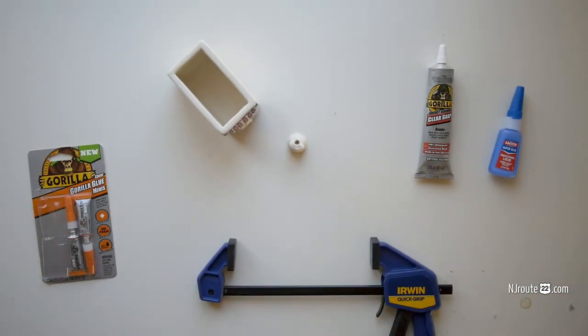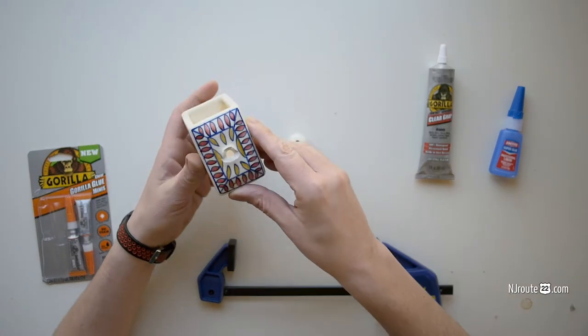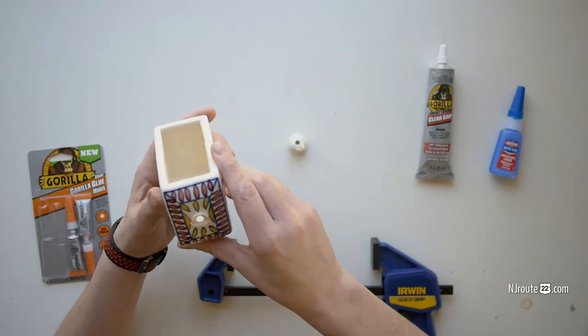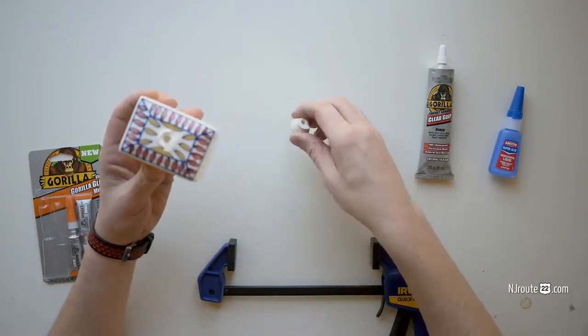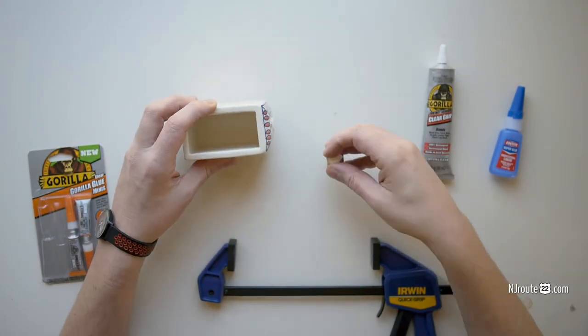Today we're going to do something that's a little more complicated. We're going to glue a ceramic drawer that came out of a Pottery Barn thingamabob. This little knob here fell off or broke, and I'm going to teach you how to do it.